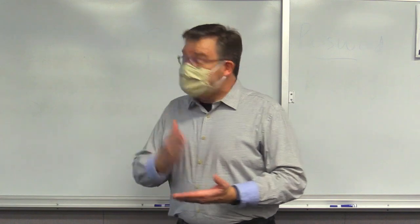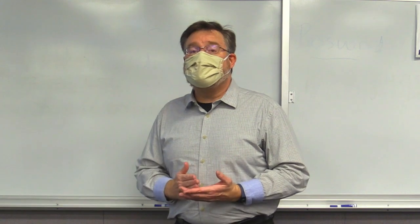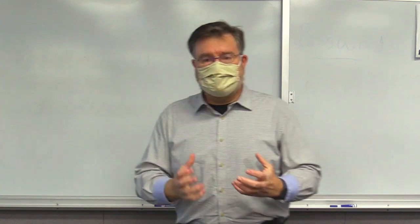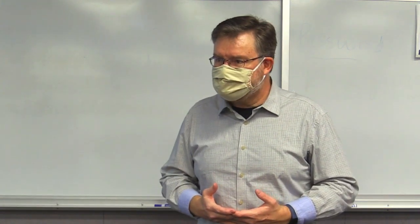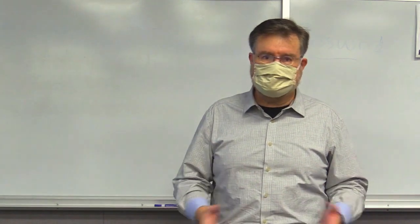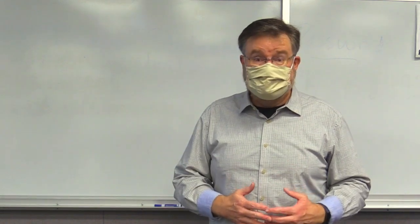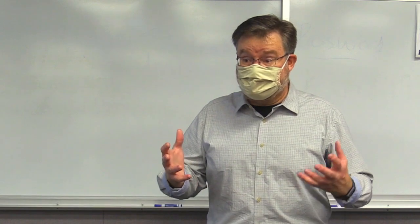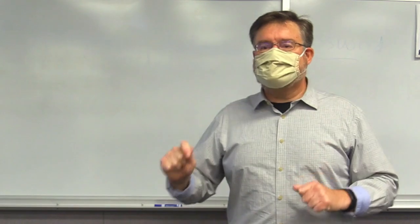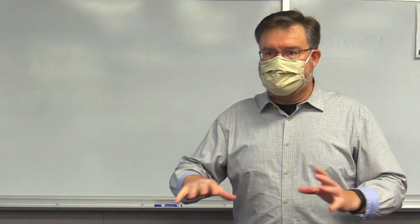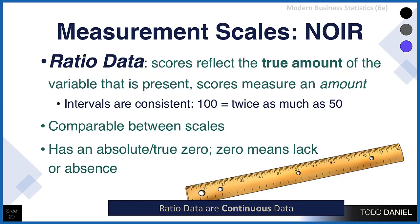What distinguishes interval from ratio level data is the presence of a meaningful zero point. On a Fahrenheit or Celsius scale, there is a zero point, but you can have numbers less than zero — it could be 20 degrees below zero. But do you remember the scale where absolute zero means the absence of molecular motion? That's the Kelvin scale — that is a ratio level. Ratio data reflect a true amount of a variable present, meaning it has an absolute zero, cannot have negative numbers, has equal intervals like interval data, and is comparable both within and between scales.